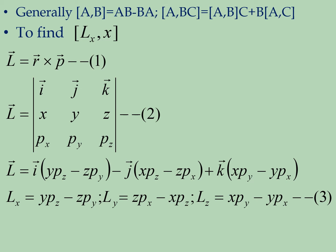Now we have to find out the value of Lx, the commutation relation between the angular momentum component and position. First we have to find out the component of angular momentum. L is equal to R cross P. We know how to find out the angular momentum. L is expressed as the determinant with i, j, k and x, y, z and Px, Py, Pz in matrix form.